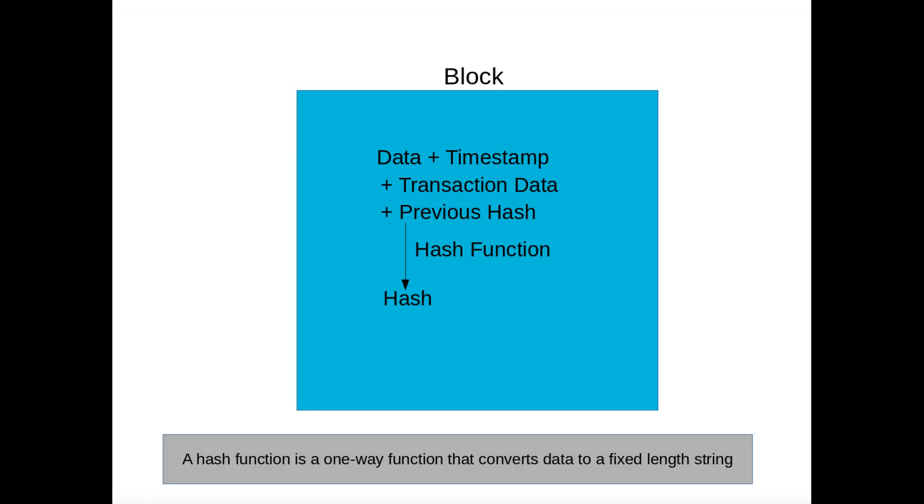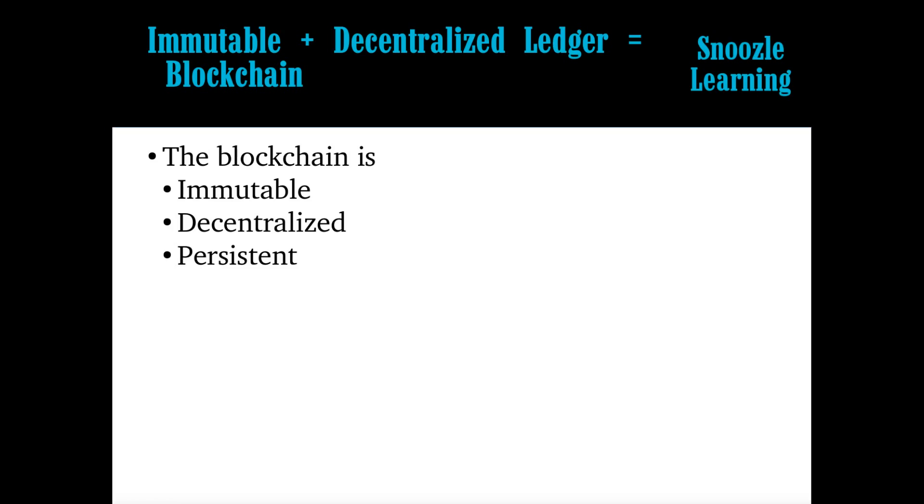If you put this data in, the data, timestamp, transaction data, previous hash into it again, you'll get the exact same hash. And this is how it's immutable. So say if the timestamp is manipulated or the transaction is manipulated, your hash will not be the same. And so that's what makes it immutable. This function here, the hash function, if you put the same data into it every single time, it won't get changed. And then also having the previous hash in there makes it so it has a connection to the previous stuff, so that you know that the previous data hasn't been modified as well.